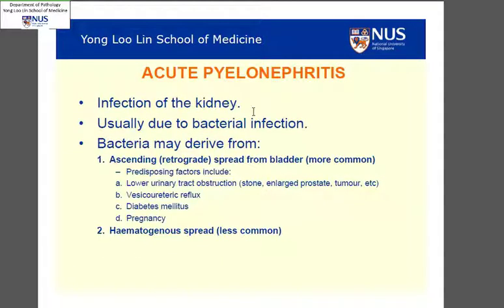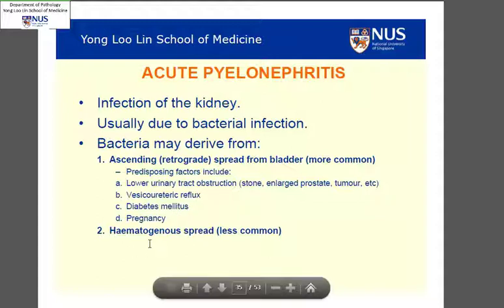This condition arises most of the time due to a bacterial infection, more frequently from an ascending infection that spreads upwards from the bladder. For example, if there is lower urinary tract obstruction due to an enlarged prostate, an obstructing tumour, or even reflux. This can be exacerbated by conditions such as diabetes. Less frequently, this is due to hematogenous spread.